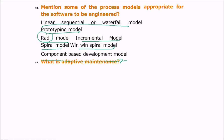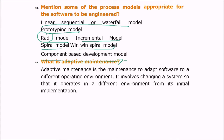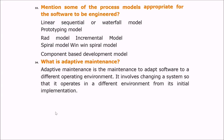What is adaptive maintenance? There are four types of software maintenance: adaptive, perfective, corrective, and preventive. Adaptive maintenance is the maintenance done to adapt software to a different operating system — it involves changing a system so that it operates in a different environment from its initial implementation.